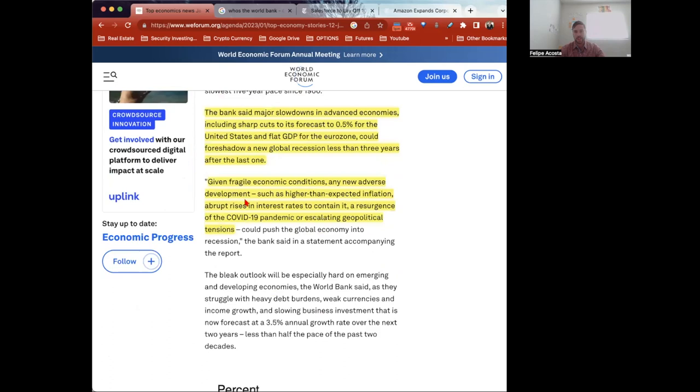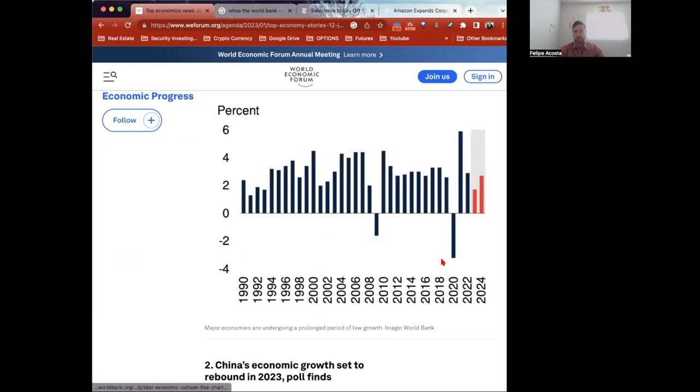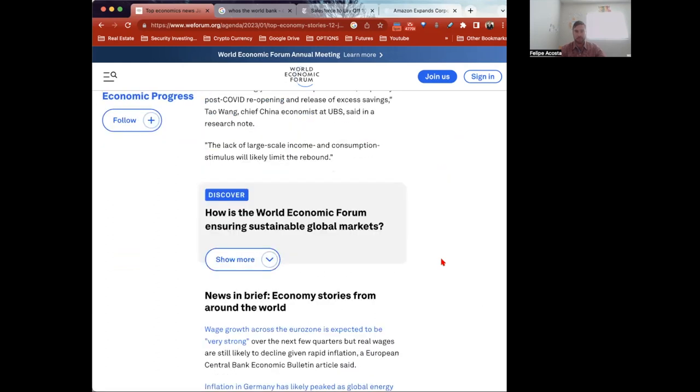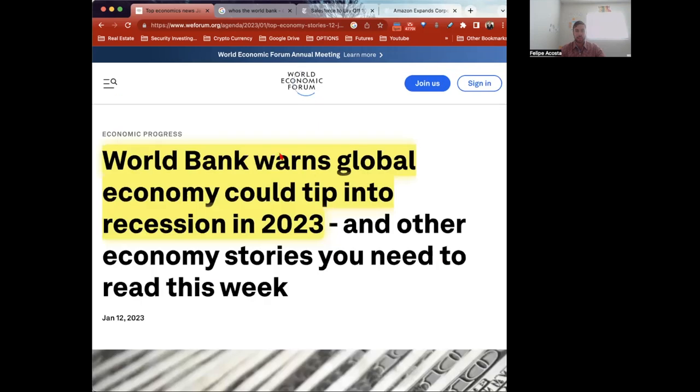Given fragile economic conditions, any new adverse developments such as higher than expected inflation, abrupt rises in interest rates to contain it, a resurgence of the COVID-19 pandemic, or escalating geopolitical tensions such as political events, maybe issues with China or so forth. So yeah, basically a lot of the banks are signaling, again they say potential recession, we're already in a recession.